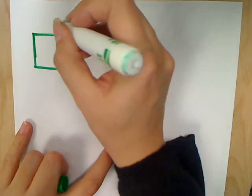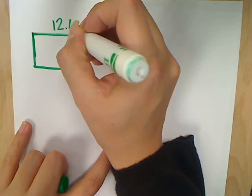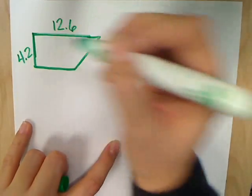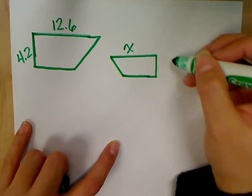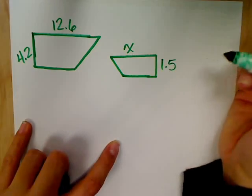It doesn't look like the other ones that we've done. So, I'm given that this measures 12.6. This is 4.2. Here we have x and 1.5. Is that right? Yes. Okay.